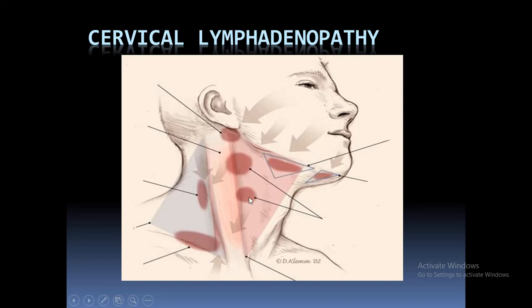There are various groups of lymph nodes present in our neck. We will discuss today the anatomy, the physiology, and different classification systems by which we classify these lymph nodes.